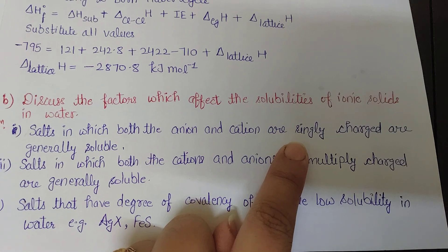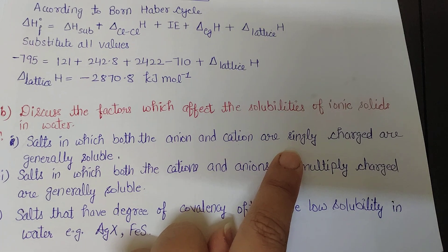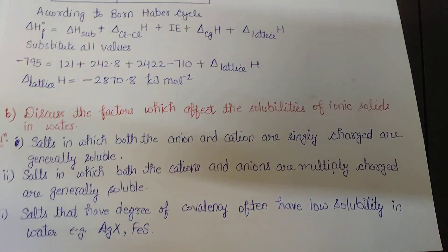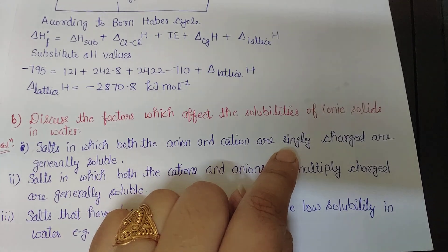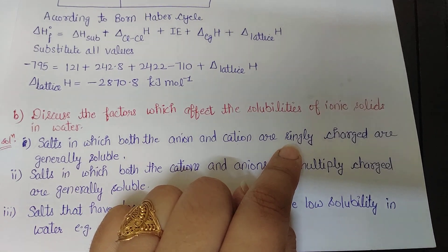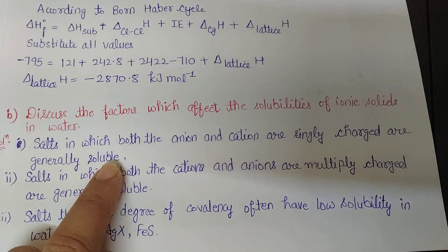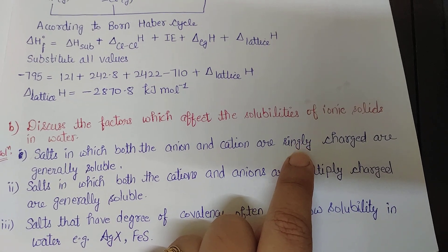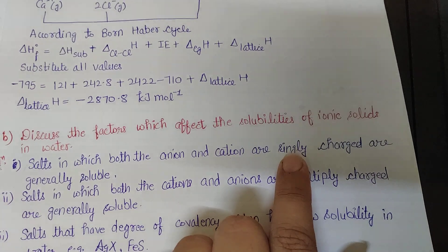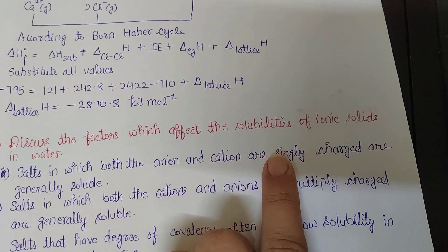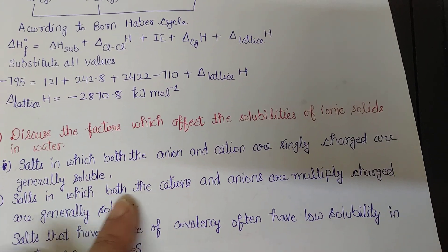The first factor: salts in which both anion and cation are singly charged — for example, sodium chloride (Na⁺ and Cl⁻) — are generally soluble. Singly charged means only one positive charge on the cation and one negative charge on the anion. The more the charge — whether positive or negative — the more the solubility decreases.